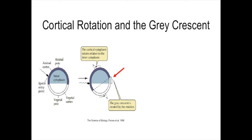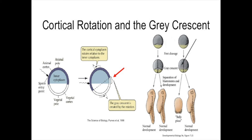The gray crescent is significant because it marks the region of gastrulation. If the gray crescent is not present in the blastomere, the embryo will develop improperly into a belly piece.